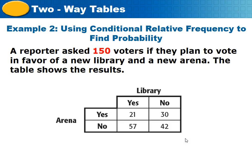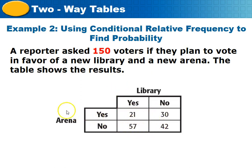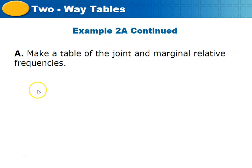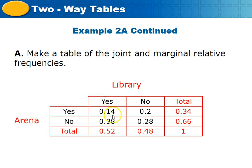Now we'll use conditional relative frequency to find probability. A reporter asked 150 voters if they plan to vote in favor of a new library and a new arena. All numbers add up to 150, so we divide each by 150 to create our table of joint and marginal relative frequencies. Go ahead and do that, then double-check your work.